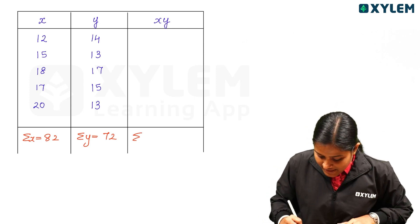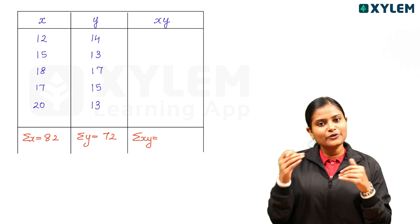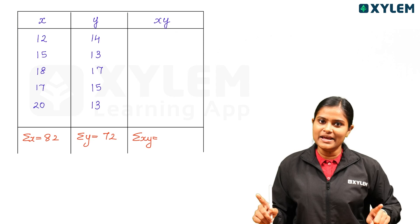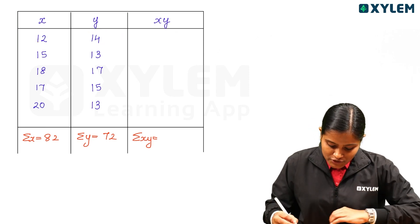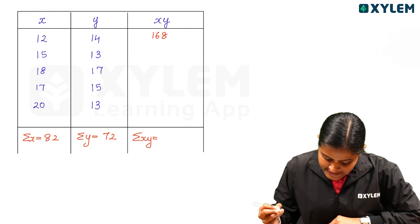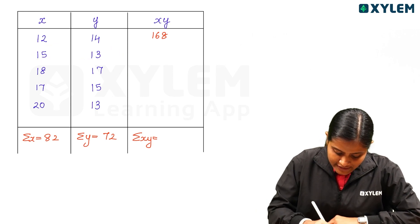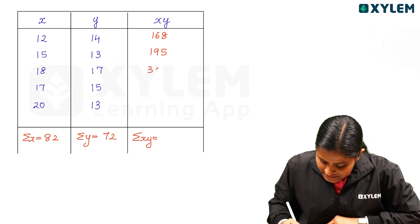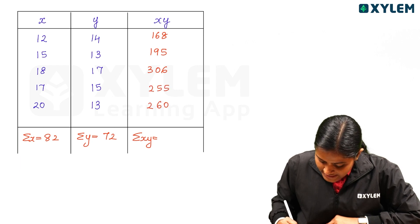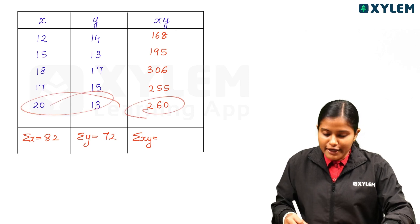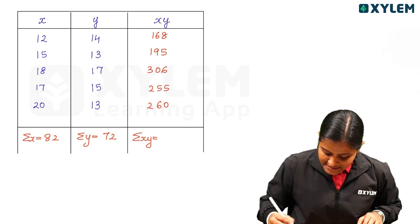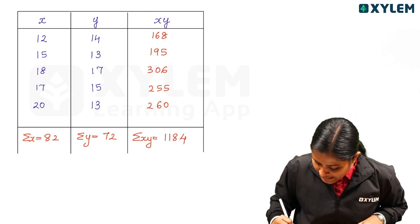Now we calculate summation XY by multiplying corresponding X and Y values. 12 into 14 equals 168. 15 into 13 equals 195. 18 into 17 equals 306. Next we get 255. And finally, 13 into 20 equals 260. So summation XY equals 1184.